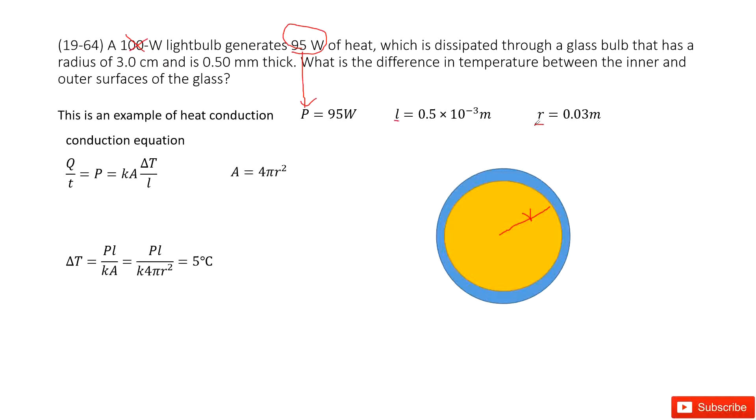Now ask you what is the difference in temperature between the inner and outside surface temperature. So it looks like we need to find the delta T between the inner and outer. You can see the heat generated by the light bulb and then transferred from the inner to outer by this glass.